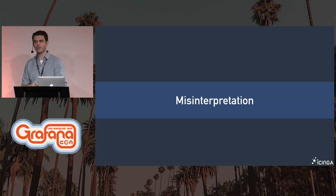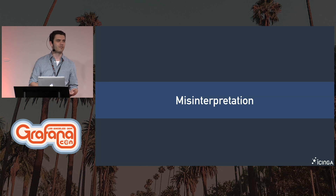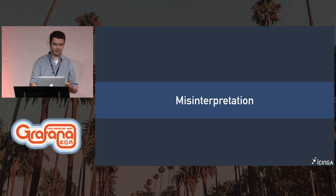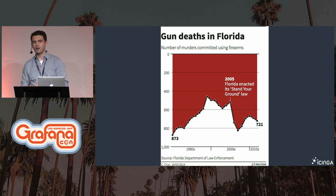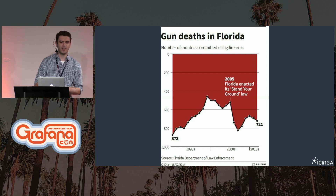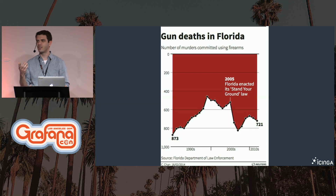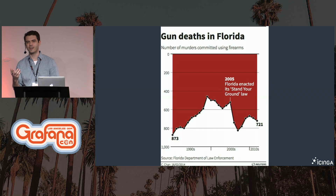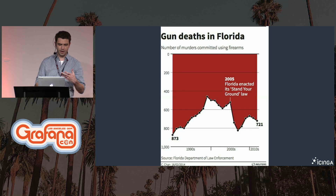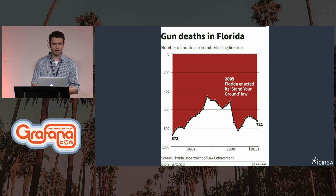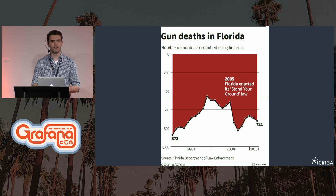When I started to prepare for this talk, I searched the web for the worst graph I could find, and I think I got a pretty good one. It's about a new law that came up in Florida in 2005 about guns, and it makes us think that when the gun law was new in Florida, the rate of murders by guns dropped.